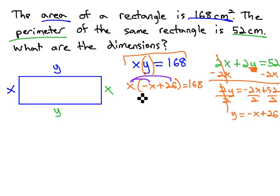Solving then, we'll start by distributing, giving us negative x squared plus 26x equals 168.